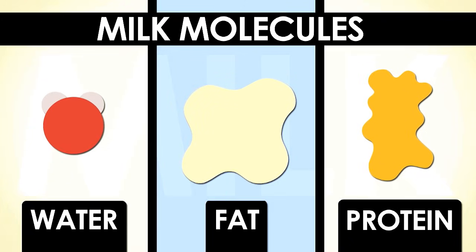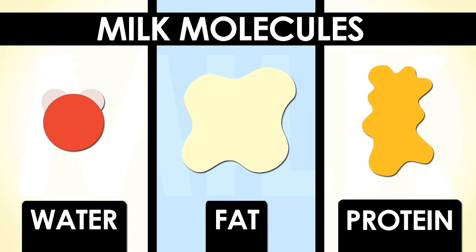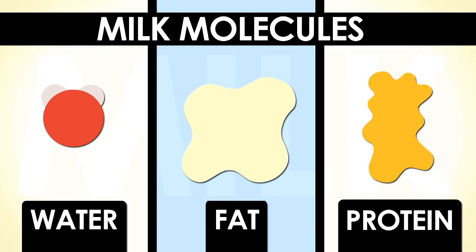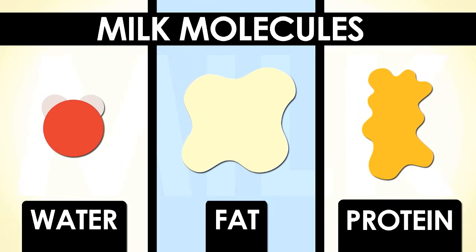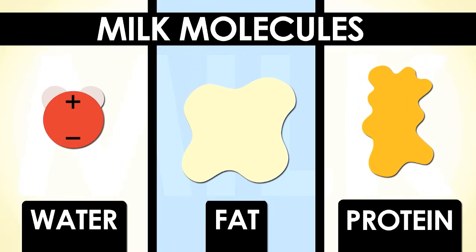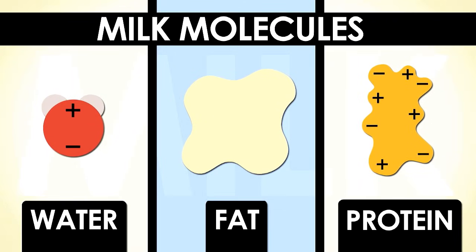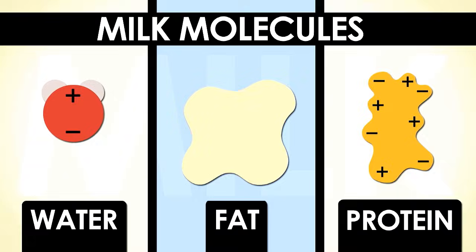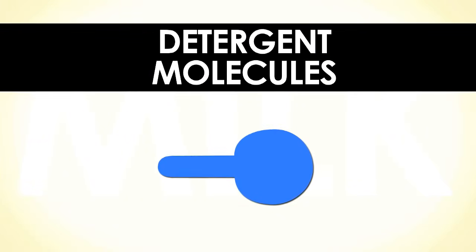They're all molecules made up of different atoms and they all interact with the dish detergent differently. The water has positive and negative charges on it and the fat has no charges and the protein is very complicated and has positive and negative in different places. Detergent molecules have a negative charge at one end and no charge at the other.